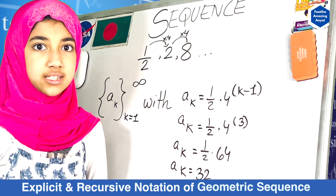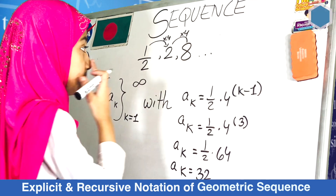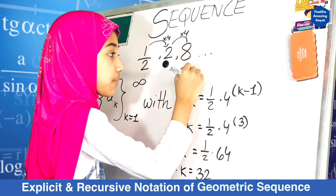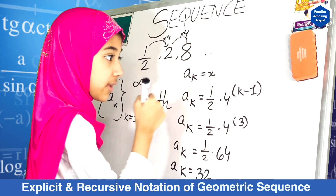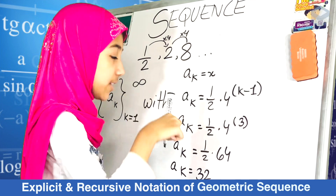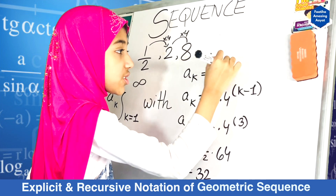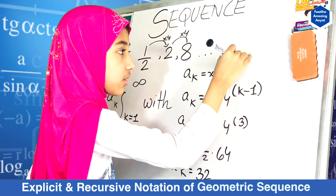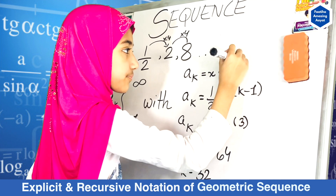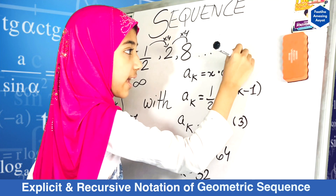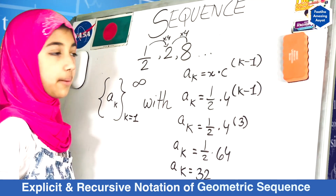So dear viewers, we aimed for 32 because A times 4 was 32, and we got the answer — so it works. This is the explicit. Now what is the basic structure that you need to remember? The basic structure is A sub k is equals to your first term times your common difference to the power k minus 1. This is the basic structure that you need to remember.